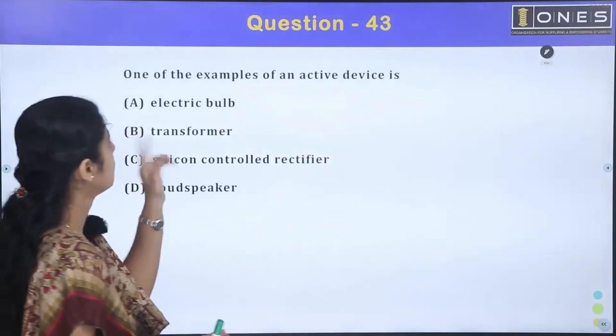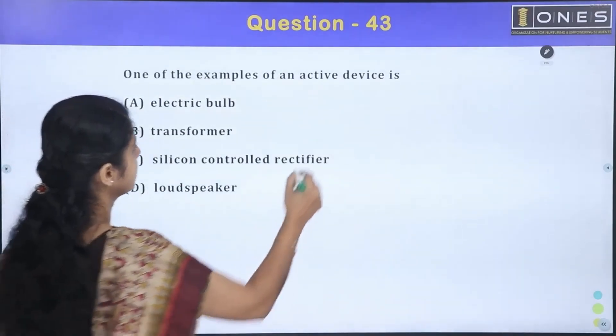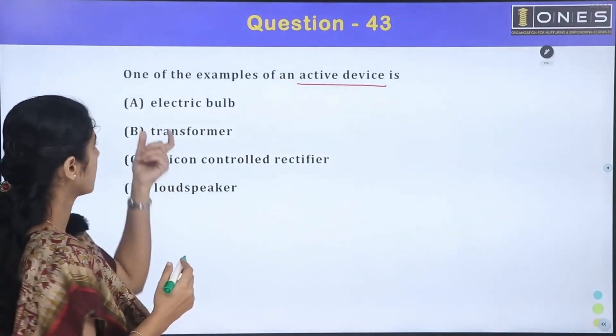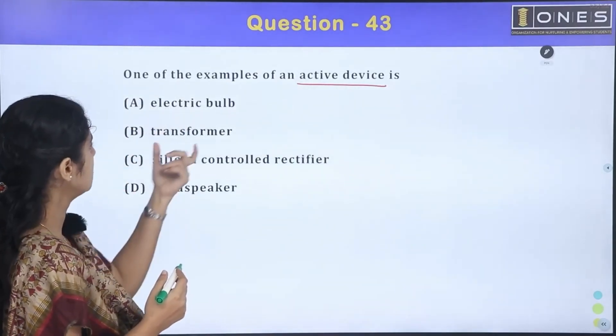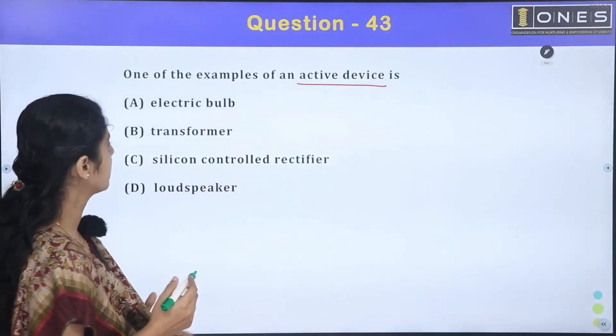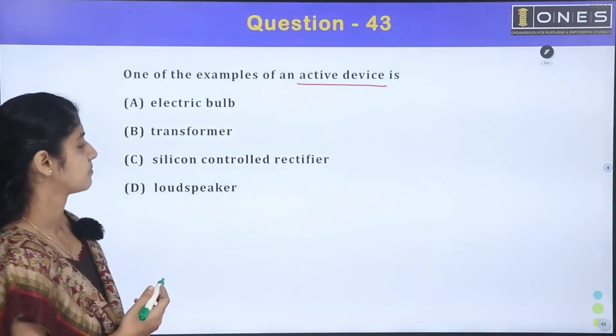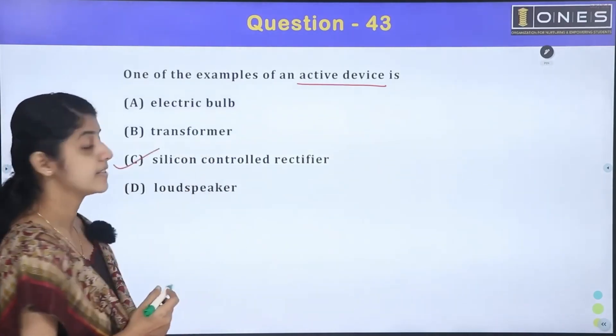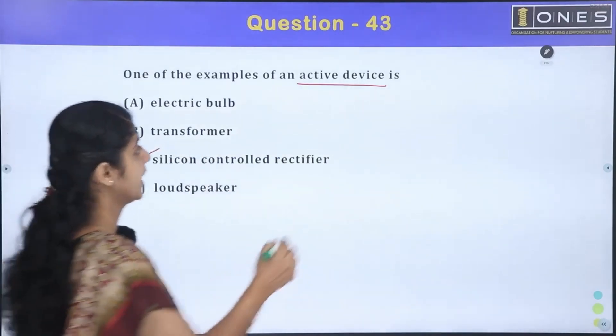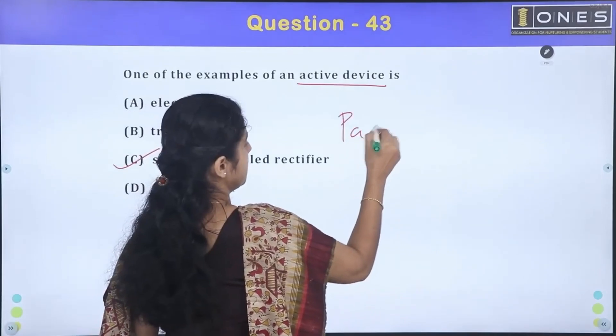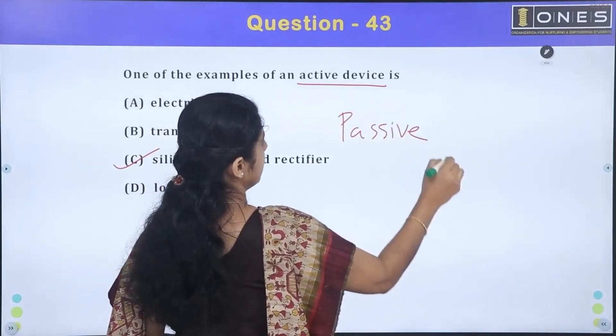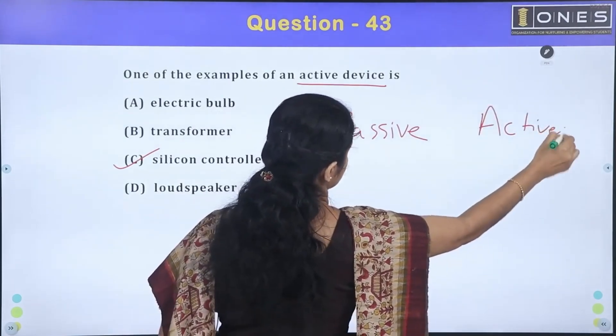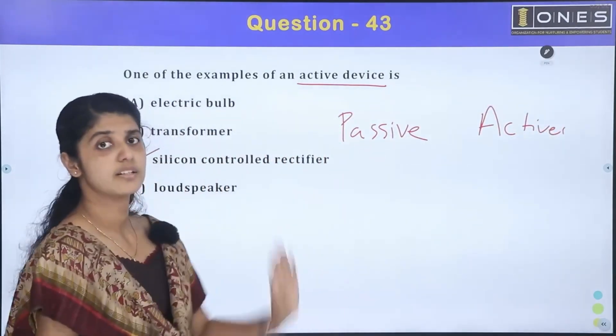Next question: One of the examples of active device. Options: electric bulb, transformer, silicon control rectifier, loudspeaker. Option C is the answer. There are two types of classification we are learning: passive devices and active devices.